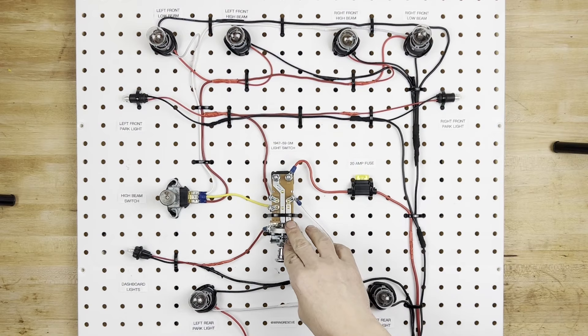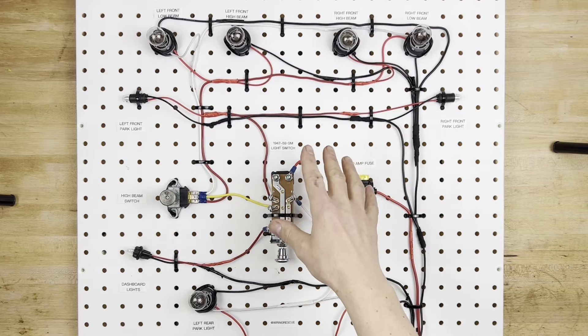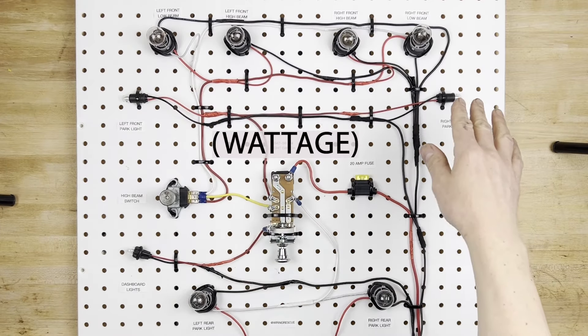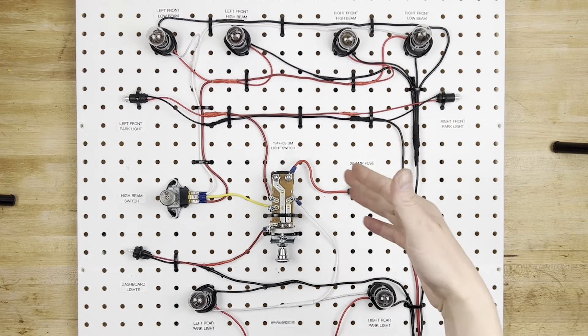So to start off, this headlight switch is rated at 20 amps, which means you can't have more than 20 amps flowing through this. So that means you have to add up all of your wattage, and make sure that that is not going to exceed 20 amps, because if it does,